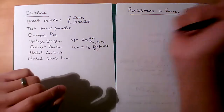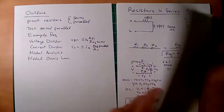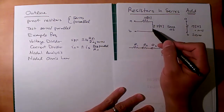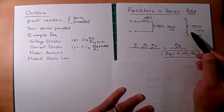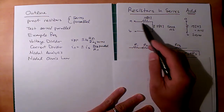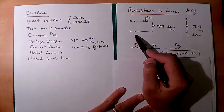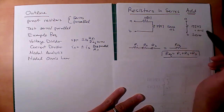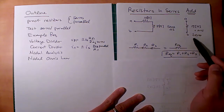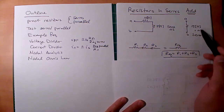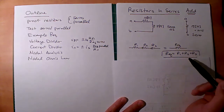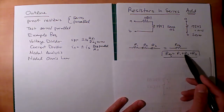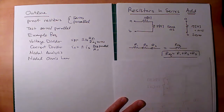Let's begin with this proof for resistors. If we have multiple resistors in series we can combine them by just adding them up. So if you had 10 and 5 ohms, from the perspective of terminals A and B, this is the same as one single 15-ohm resistor. The simple formula is R_eq = R1 + R2 + R3.